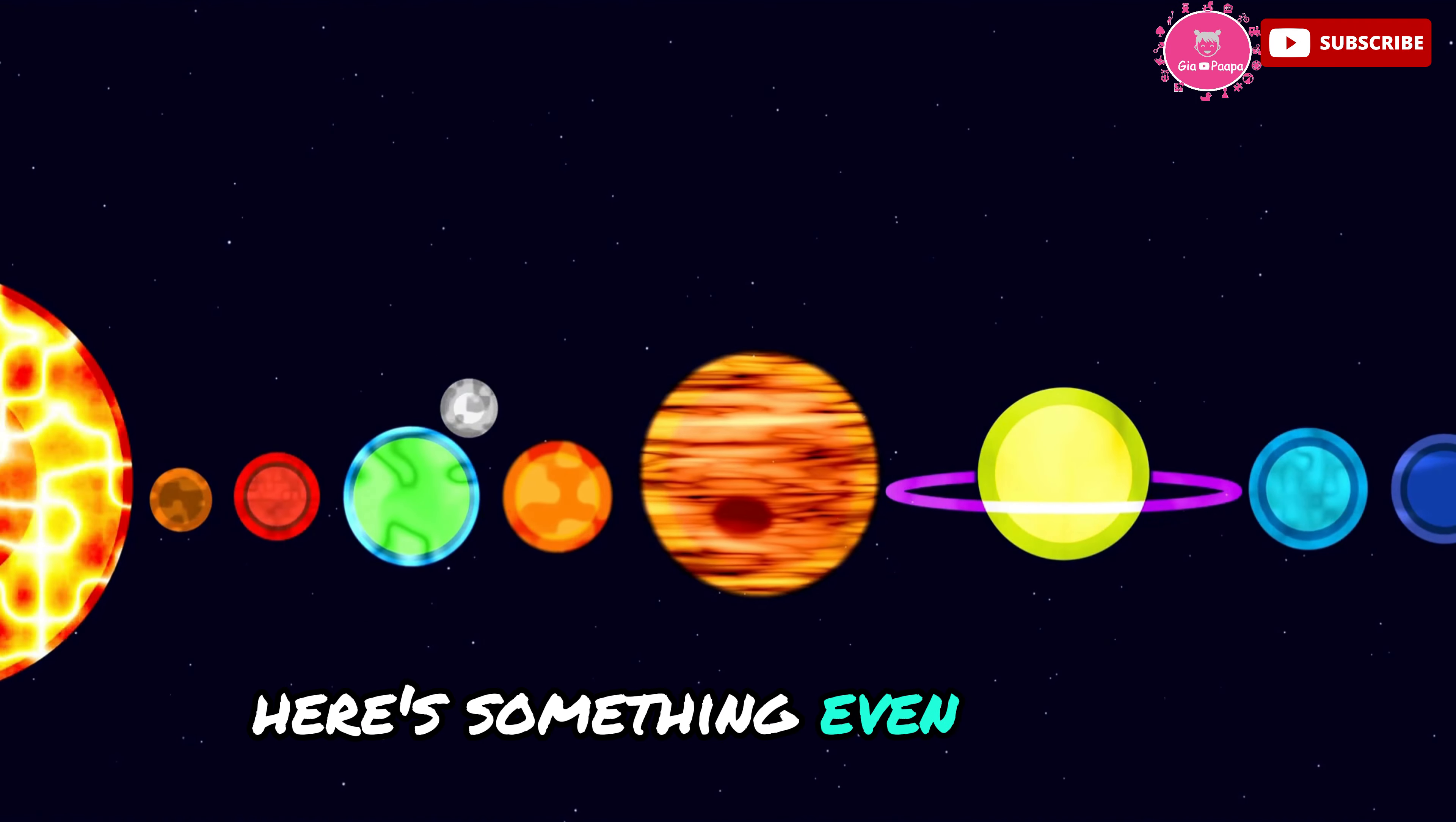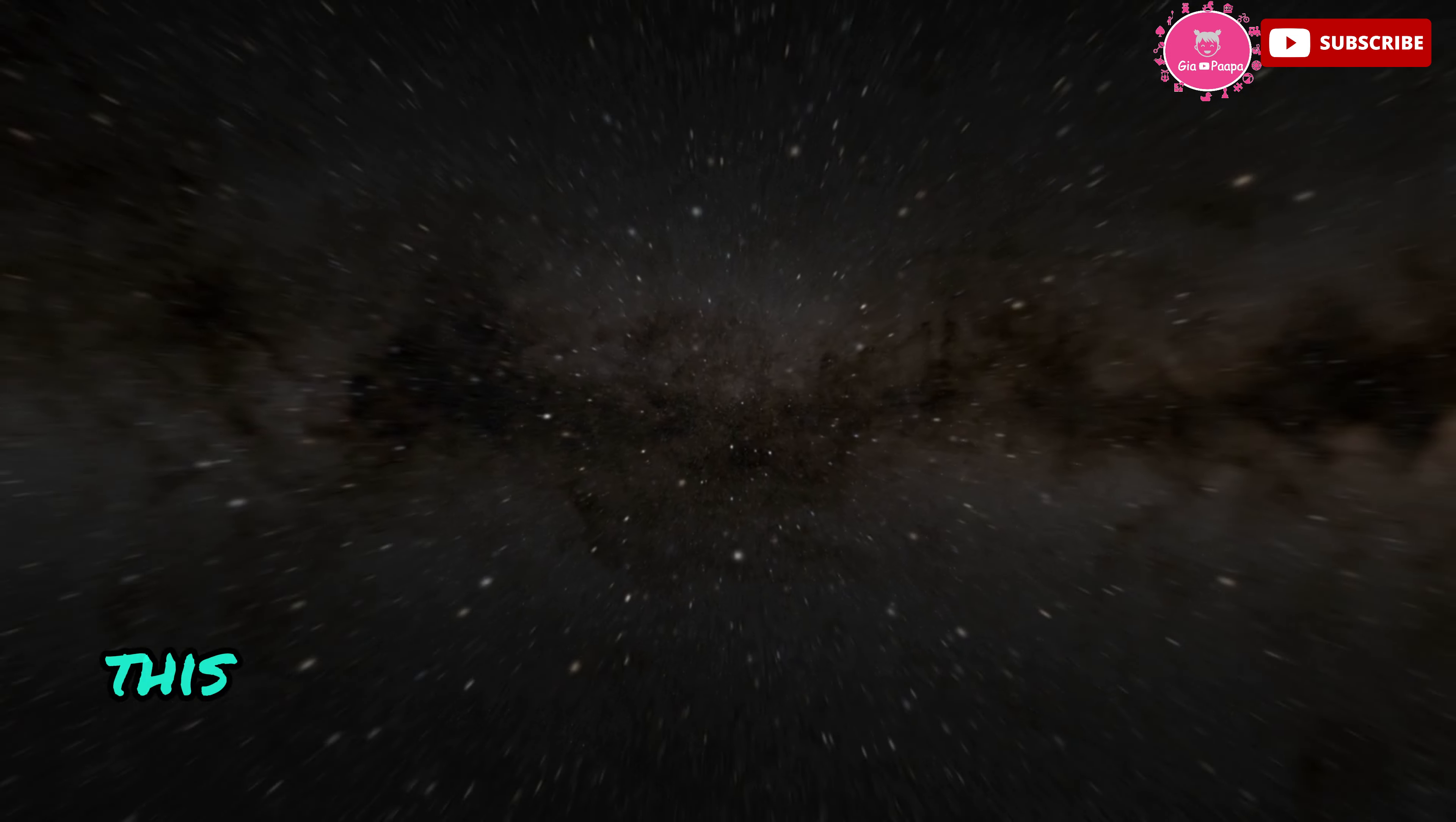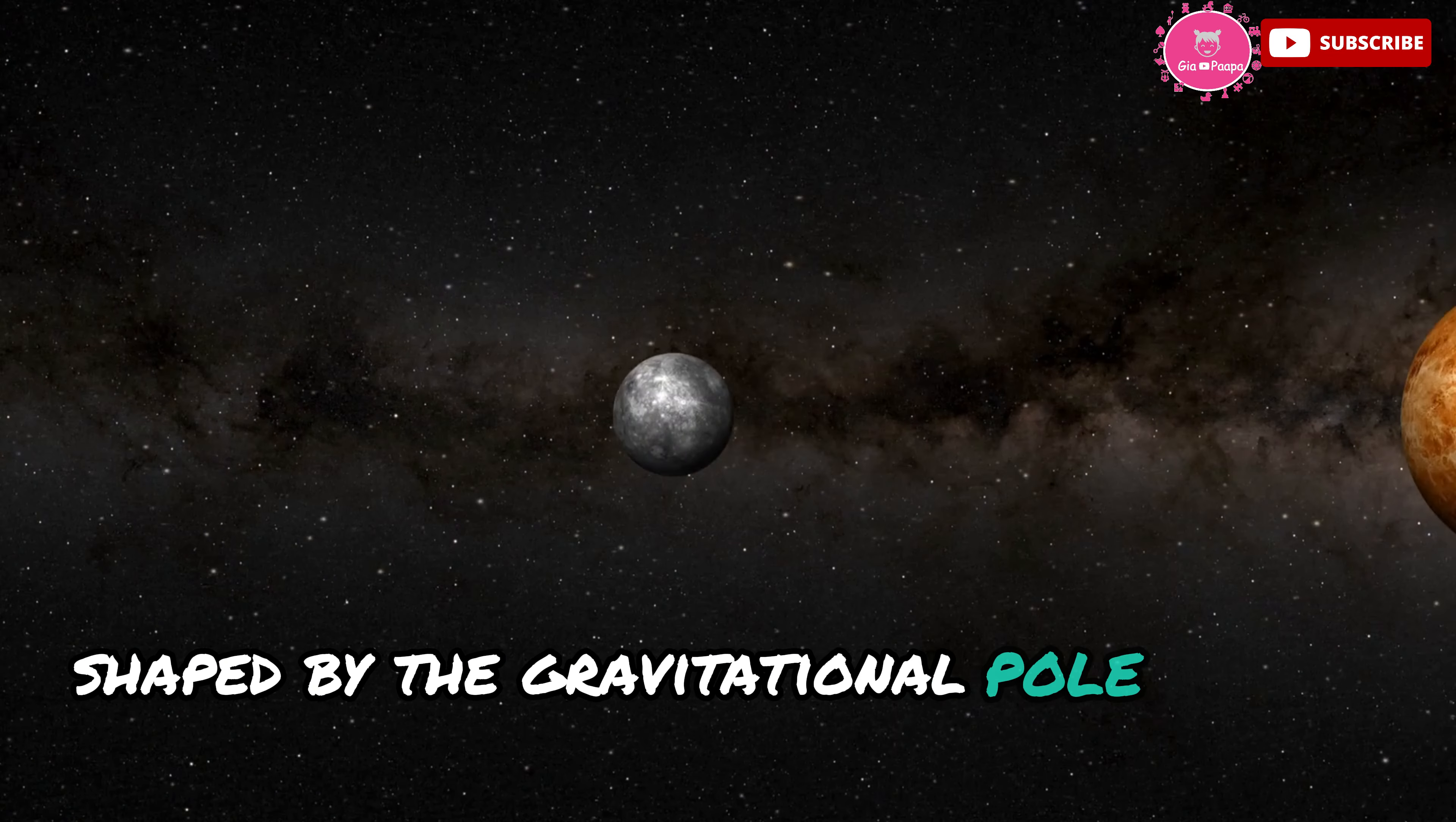Here's something even cooler. Our solar system's motion isn't just influenced by the sun's orbit. Gravitational forces from other stars, galactic tides, and even dark matter play a role in our journey. This intricate dance is a result of the interplay between these massive forces. And it's not just a smooth ride. The path is filled with twists and turns, shaped by the gravitational pull of the galaxy.